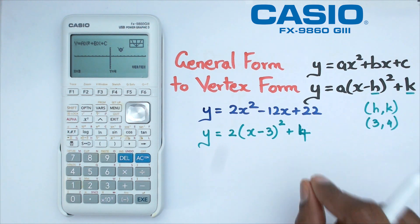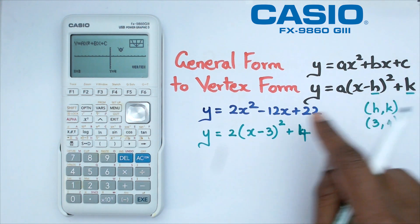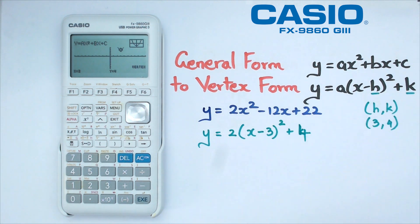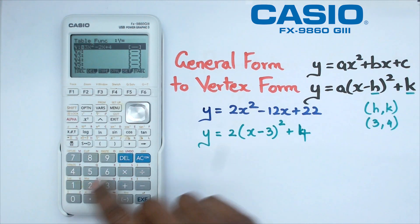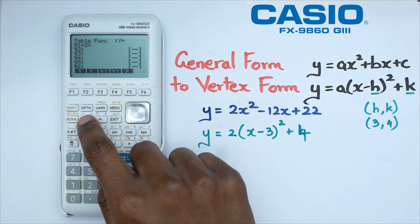Anyway, now what we want to do is we want to check whether this is actually the right way of doing this. So what we're going to do is double check this, we're gonna go to the table function and we're gonna put both of these equations in there.